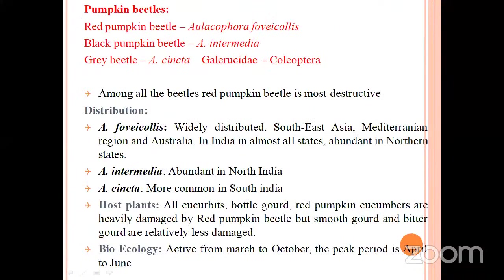The second important major pest is the pumpkin beetle, Aulacophora foveicollis. Three species are present: the red pumpkin beetle Aulacophora foveicollis, the black pumpkin beetle Aulacophora intermedia, and the gray pumpkin beetle Aulacophora singha. It belongs to the family Galerucidae and order Coleoptera. Among all beetles, the red pumpkin beetle is most destructive. These are polyphagous pests and infest bitter gourd, snake gourd, melon, pumpkin, and coccinia. Foveicollis is widely distributed in Southeast Asia, the Mediterranean region, Australia, and almost all states of India. Intermedia is abundant in North India and singha is more common in South India.